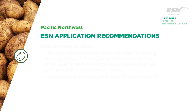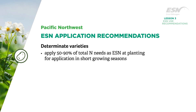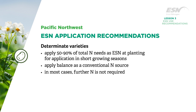For determinate varieties and/or short growing seasons in the Columbia Basin, apply 50 to 90 percent of total nitrogen needs as ESN at planting, with the balance as a conventional nitrogen source. In most cases, further nitrogen is not required.